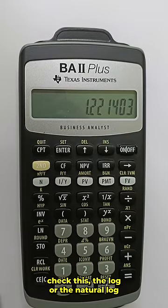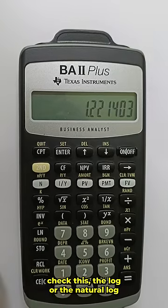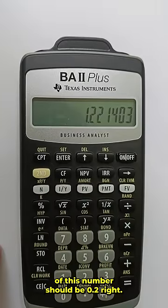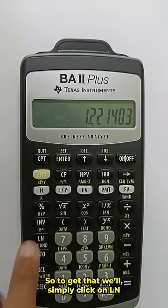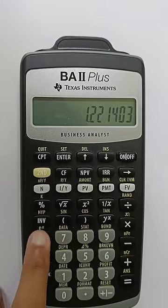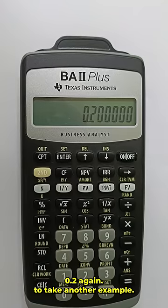Now if you want to check this, the natural log of this number should be 0.2, right? So to get that we simply click on ln and we get 0.2 again.